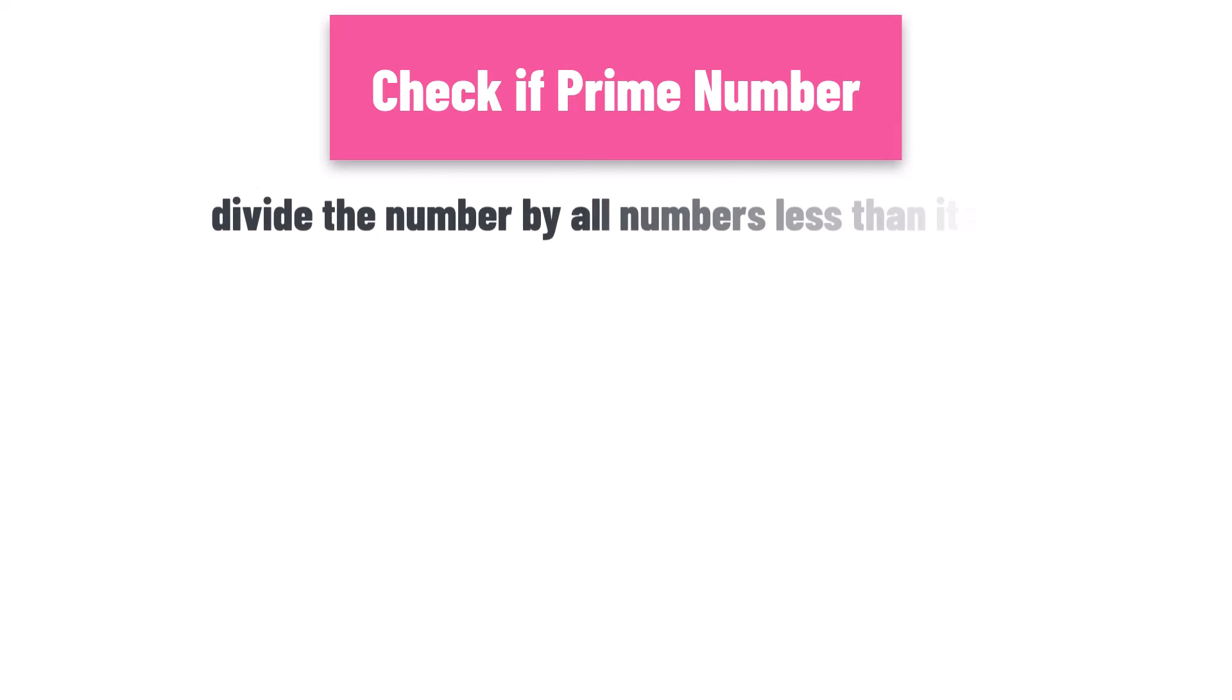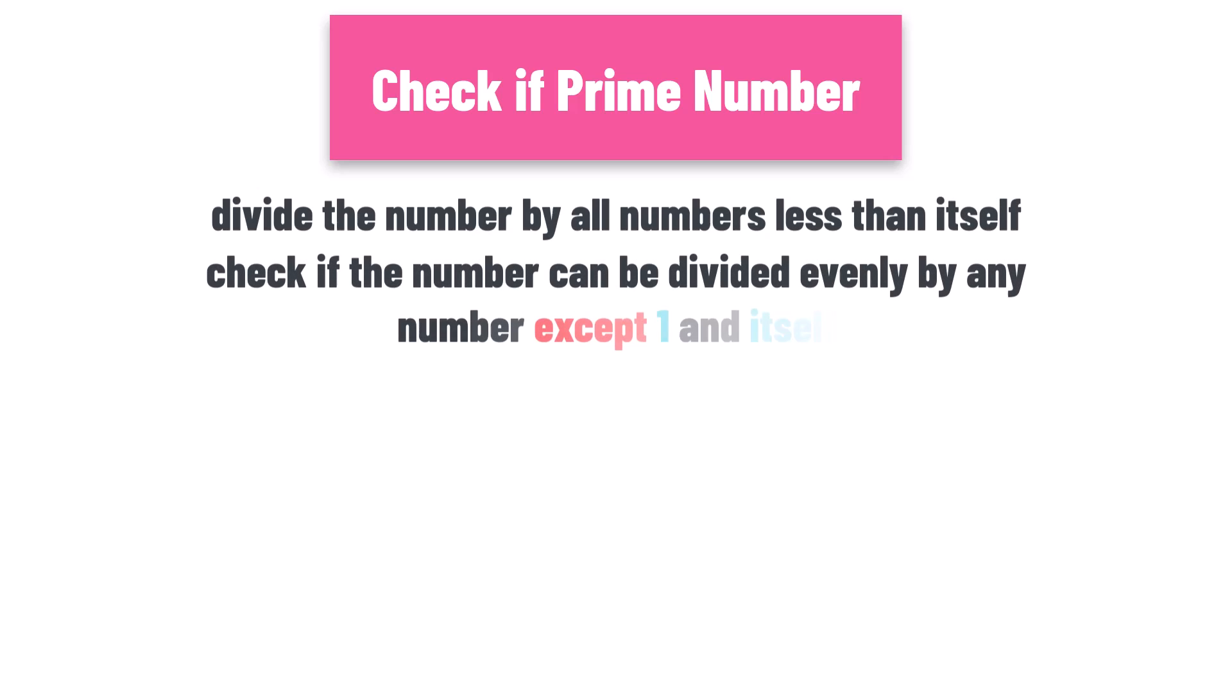To check if a number is prime, we can simply divide it by all the numbers less than itself and see if any of them divide evenly, except one and itself. If we find any numbers that do, the number is not prime.